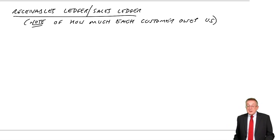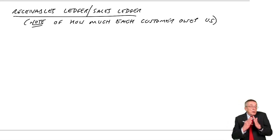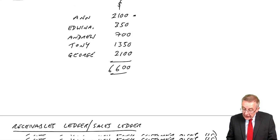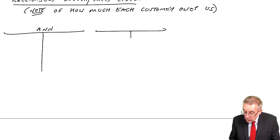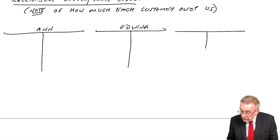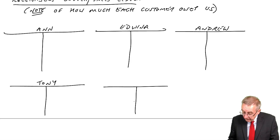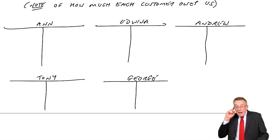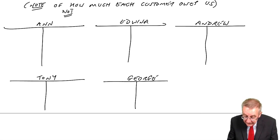It is only a note. Some companies keep little cards for each customer and make a note every time they sell or receive cash. More likely it's a book with double pages, so we effectively have a T-account for each customer. The customers on credit were Anne, Edwina, Andrew, Tony, and George — so we'll have pages for each of them. But I can't stress enough: even though these look like T-accounts, they are not double entry. They are note only.